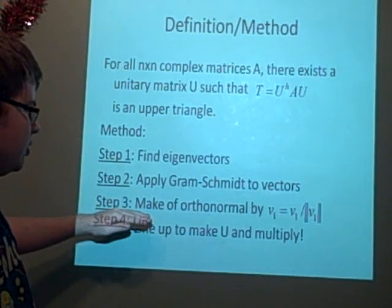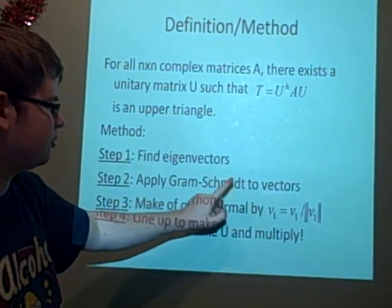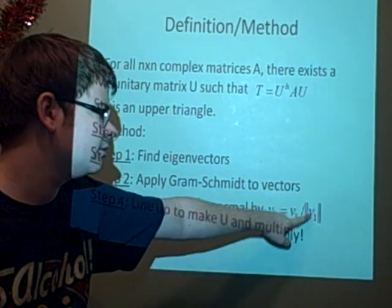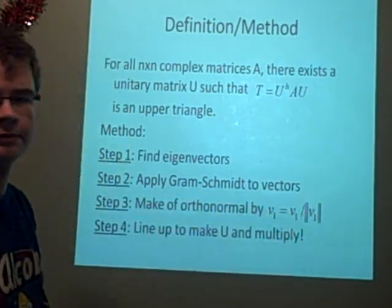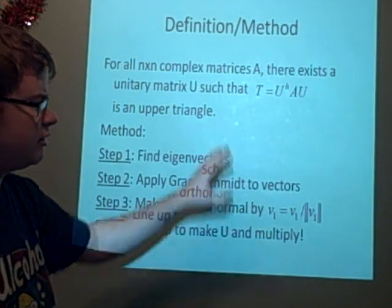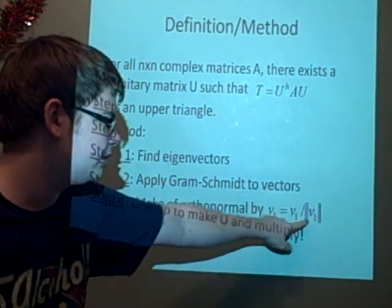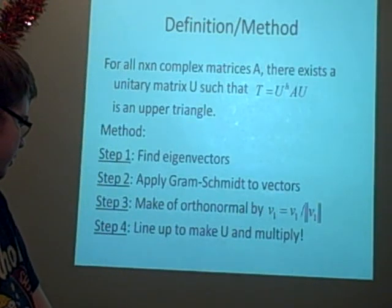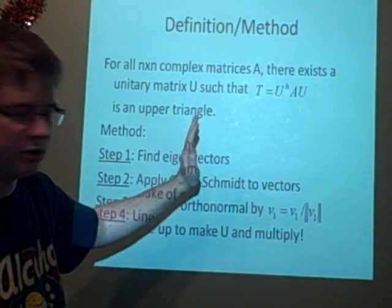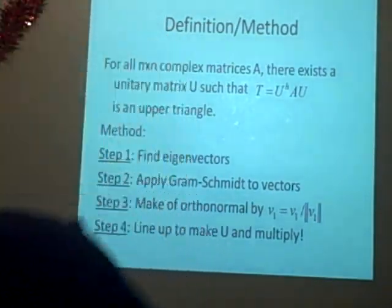Then you want to make them orthonormal, that's step three, which is you let each of the vectors that you found from the Gram-Schmidt equal the vector but divide them by their norm. So you square each value, add them together, and square root them. Then you want to line them up, like you normally do with vectors, to make our U. And we can test it as well.